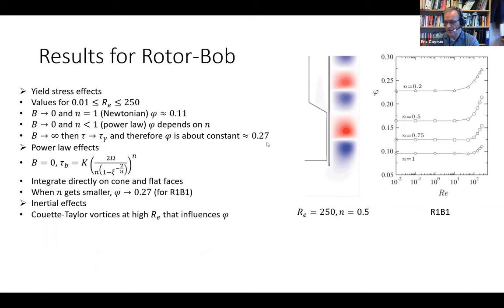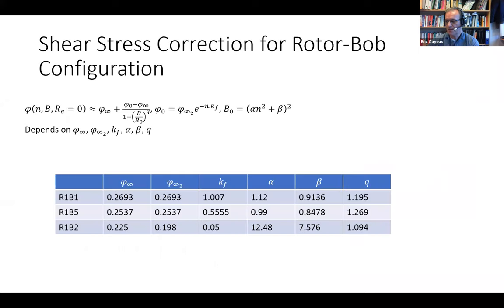In our experiments, we use a scientific rheometer (not a FAN-35) and limit rotational speed to no more than 100 rpm, because the interesting part is the low range of rotational speed. With the FAN-35, there are very few measurements at low rotational speed, and at higher speeds these influences become problematic. Lacan-Paris published a formula for calculating phi, providing numerical values for the different parameters for R1B1, R1B5, and R1B2 configurations of the rotor-bob FAN-35.